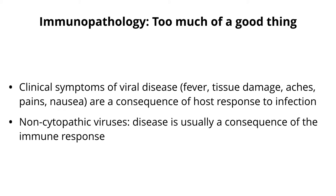So we've talked about viral and cellular virulence genes, non-coding and coding. We've talked about how viruses kill cells. But it turns out that when you get infected with a virus, much of how you feel badly and even a lot of the pathology is because of your immune response. The immune response is a two-edged sword — it clears infections, but it also causes damage. This is called immunopathology, or too much of a good thing.